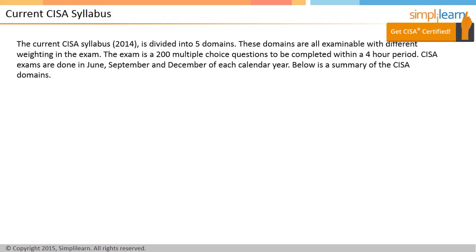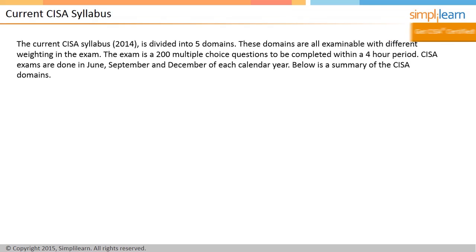The CESA exam covers five domain areas. These domains are all examinable with different weighting in the exam. The exam is 200 multiple-choice questions to be completed within a four-hour period. CESA exams are done in June, September, and December of each calendar year.